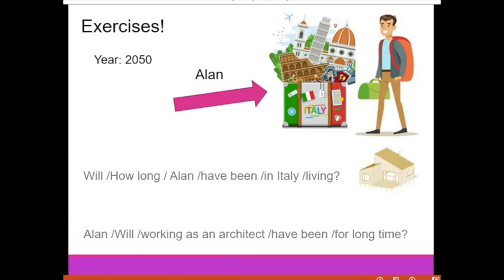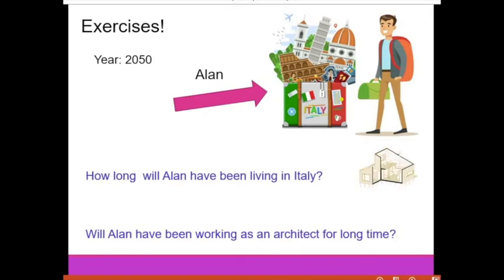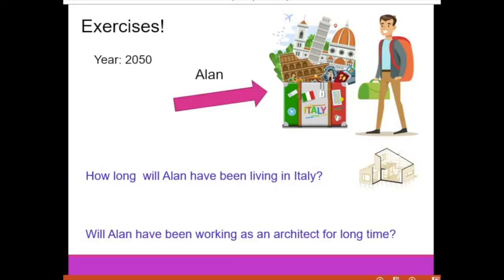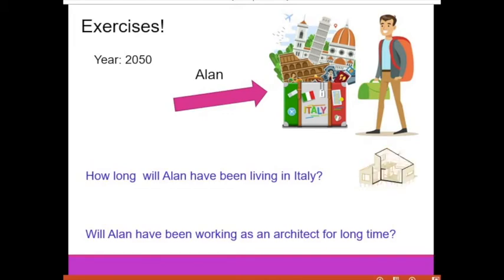Let's check the answers. The first question is: 'How long will Alan have been living in Italy in the year 2050?' The second question is: 'Will Alan have been working as an architect for a long time?' What are the possible answers? How many years do you think Alan will have been living in Italy in 2050? Probably 20 years, probably 10 years — these are good answers.